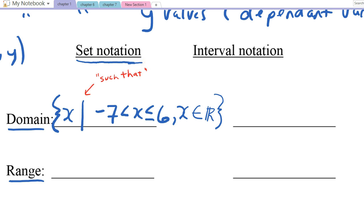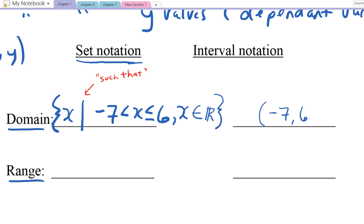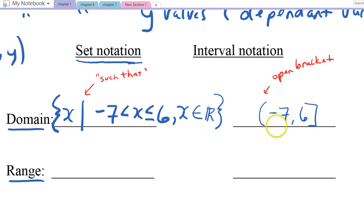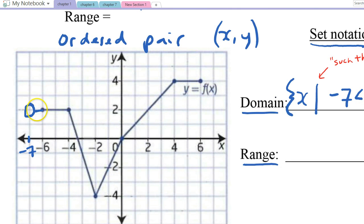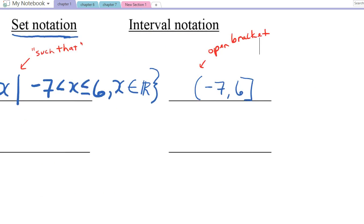Now for interval notation — it means the same thing but written differently. We go from negative 7 up to positive 6. Whether or not we touch negative 7 is shown by the type of bracket: an open bracket means negative 7 is not touched, matching the open circle on the graph. A closed bracket on the right side means 6 is included.